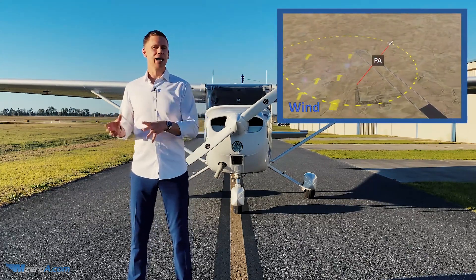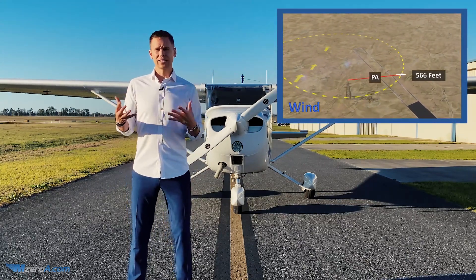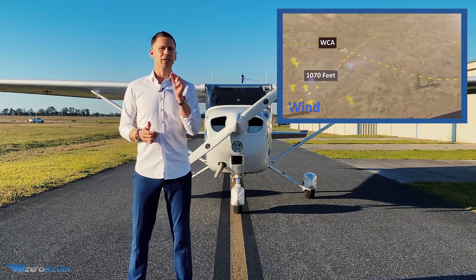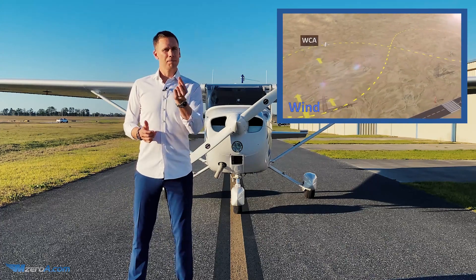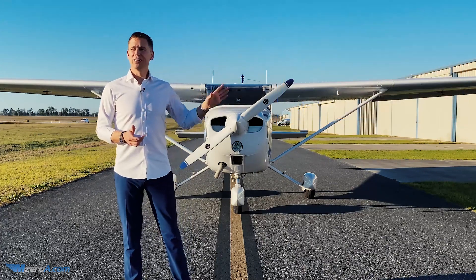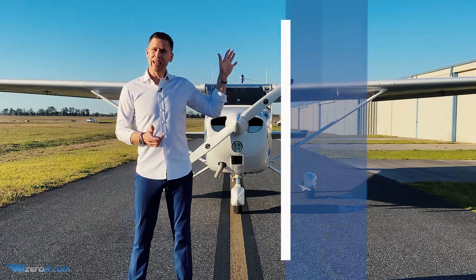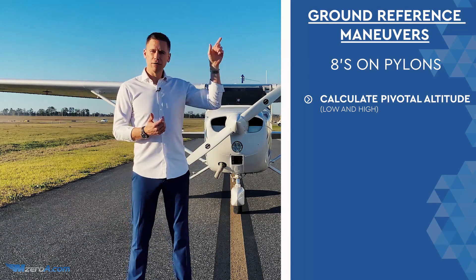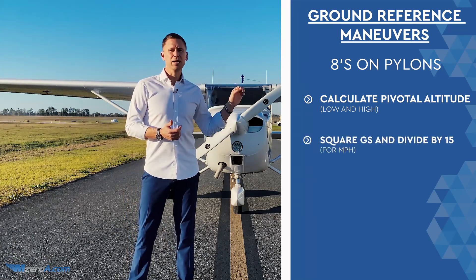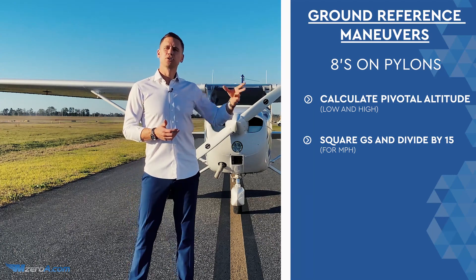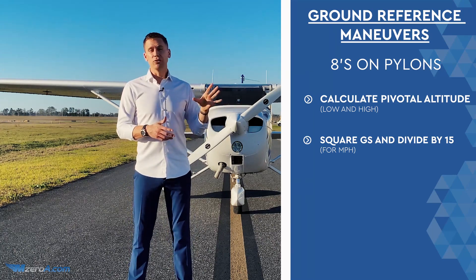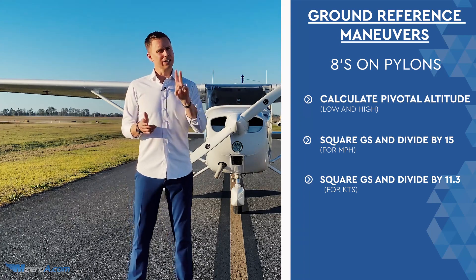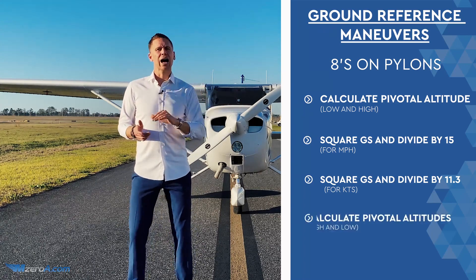Then there's a commercial pilot maneuver called eights on pylons that many private pilots don't get to practice. The goal is similar — you want to maintain the same distance from your point — but you do it through altitude, specifically pivotal altitude. You take your ground speed and square it. If you're a miles-per-hour airplane, divide by 15 to get your pivotal altitude in mph. If not, divide by 11.3 to get it in knots.